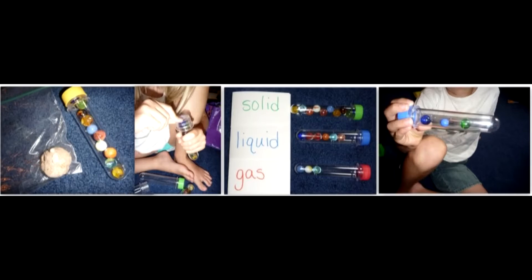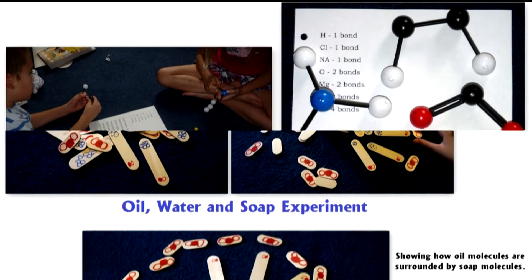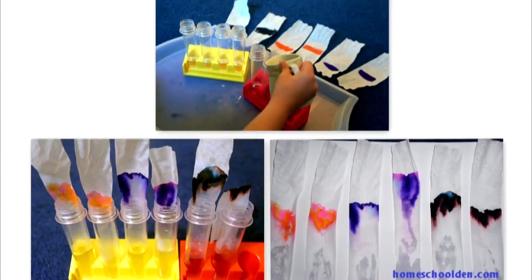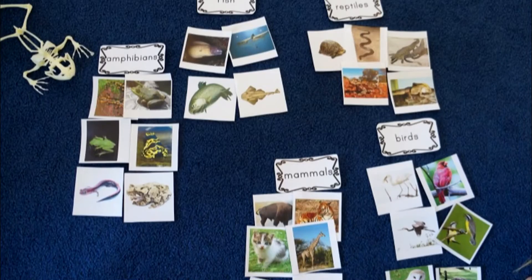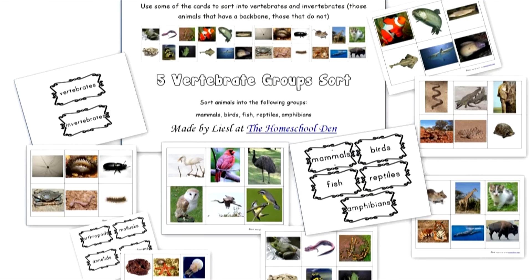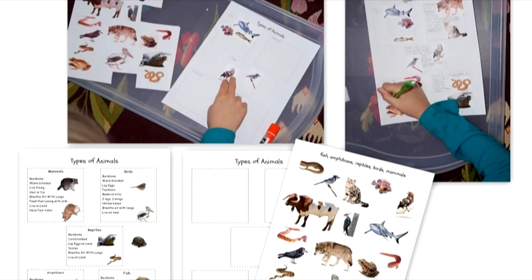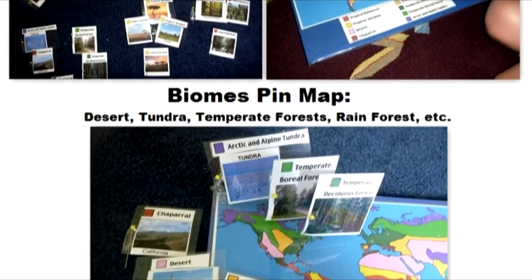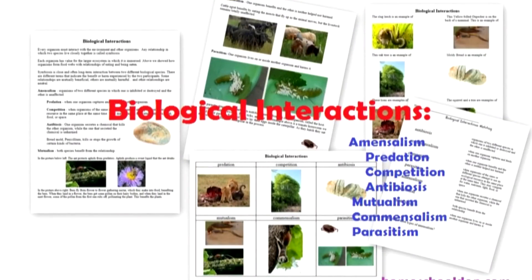We've actually covered chemistry a number of different ways — talking about atoms and molecules, acids and bases, chemical reactions, and the periodic table. And then there's biology, which you can cover from all different kinds of angles too: classification like vertebrates and invertebrates, the classification of animals, biomes and habitats, and biological relationships like mutualism and commensalism.